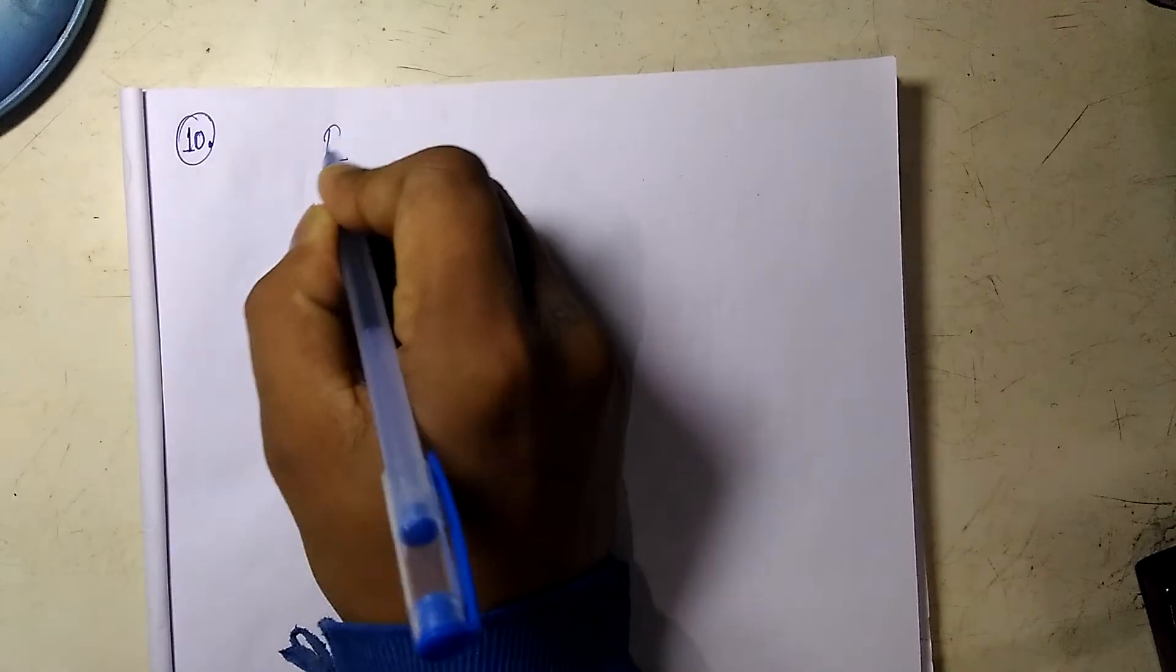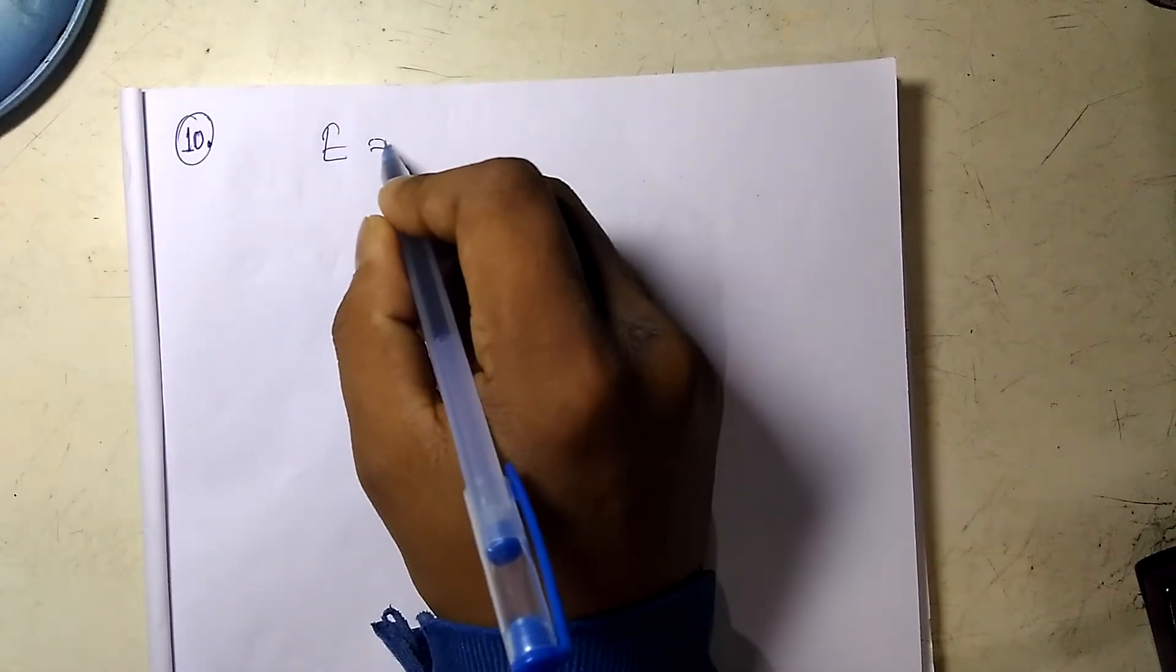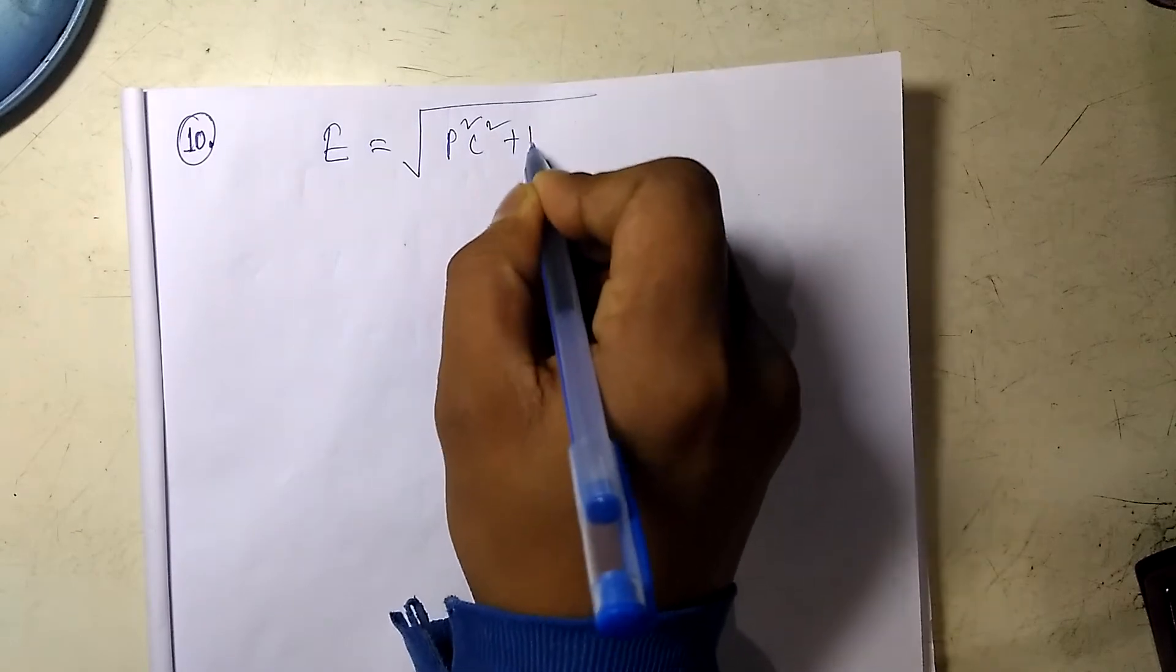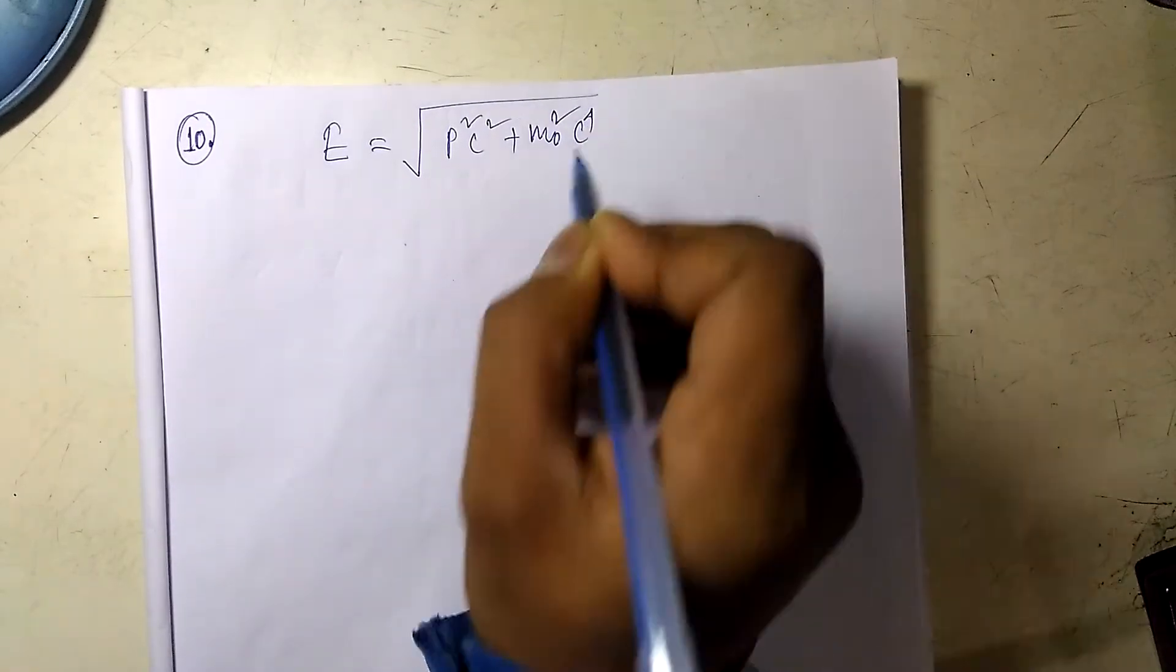So how can we approach this problem? We know the relativistic energy E is equal to the square root of p²c² plus m₀²c⁴.